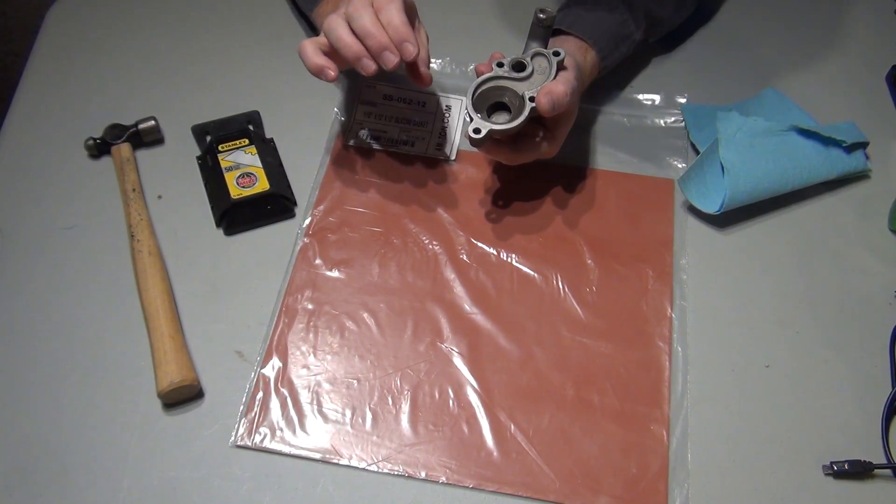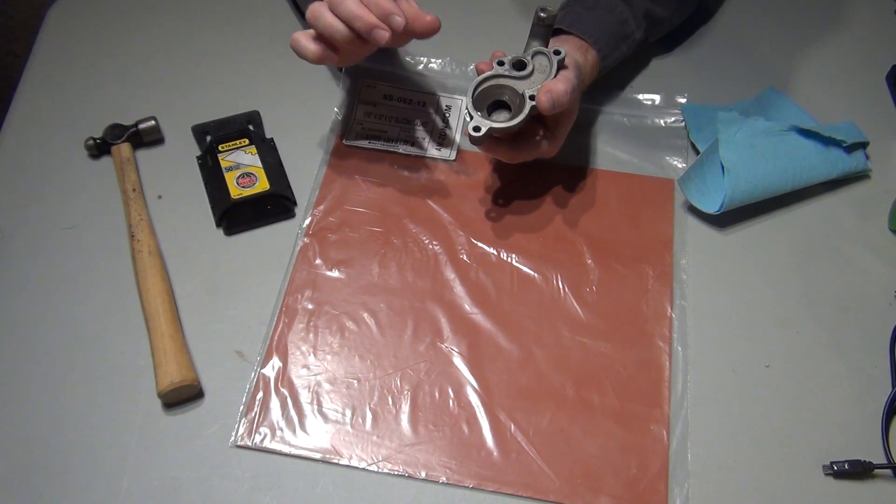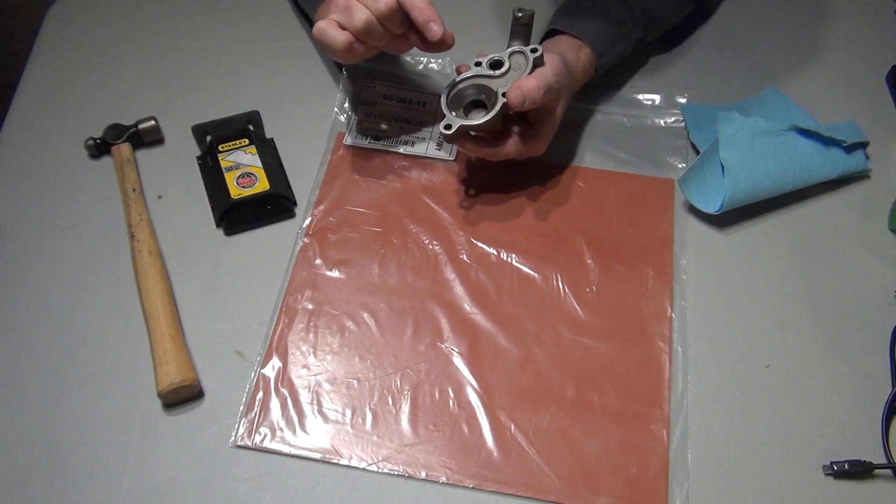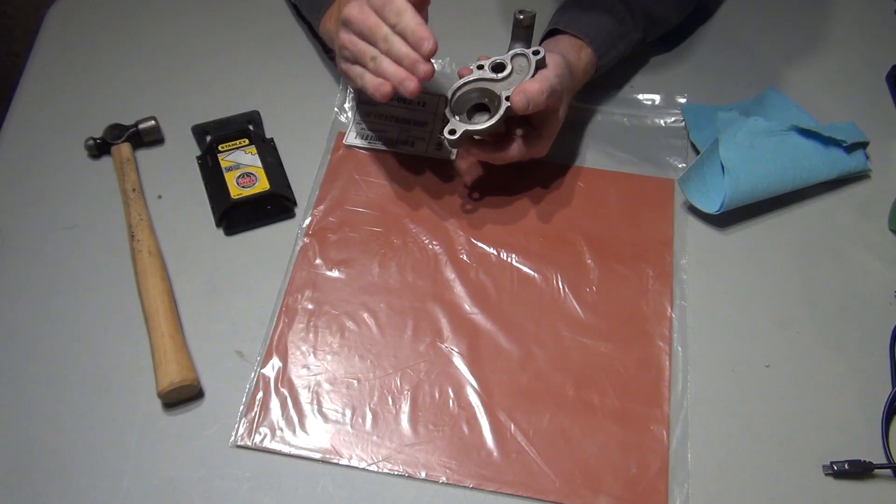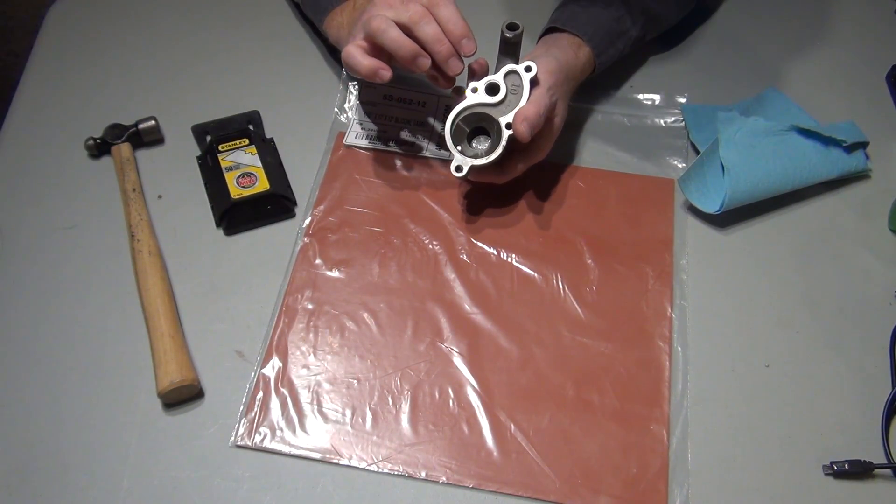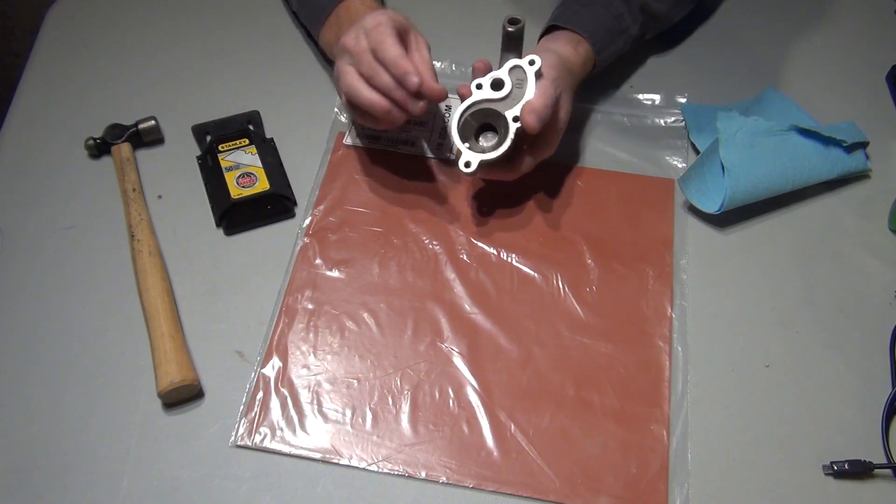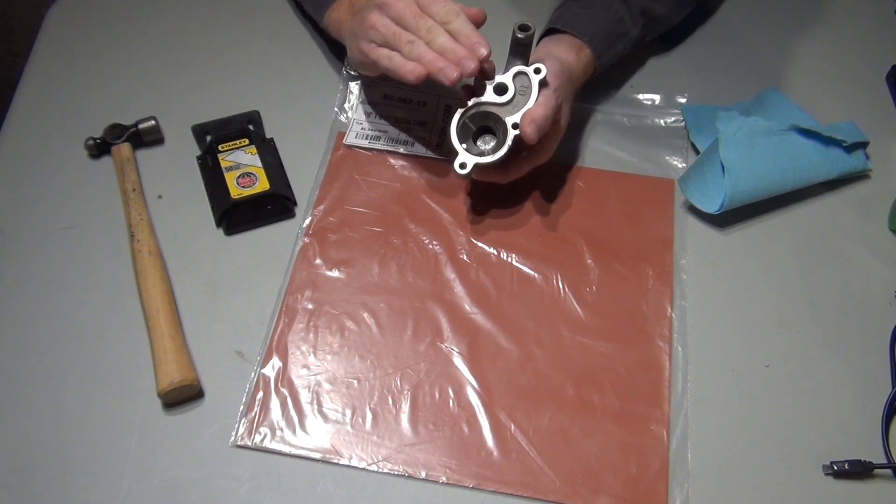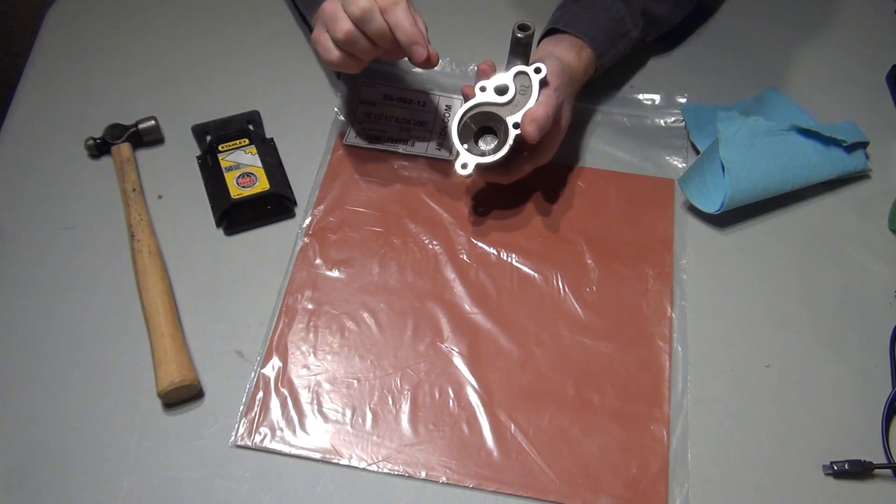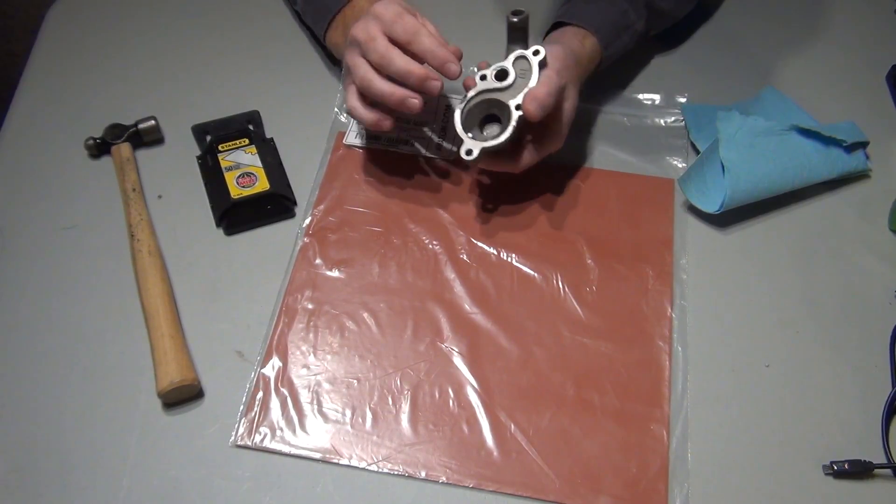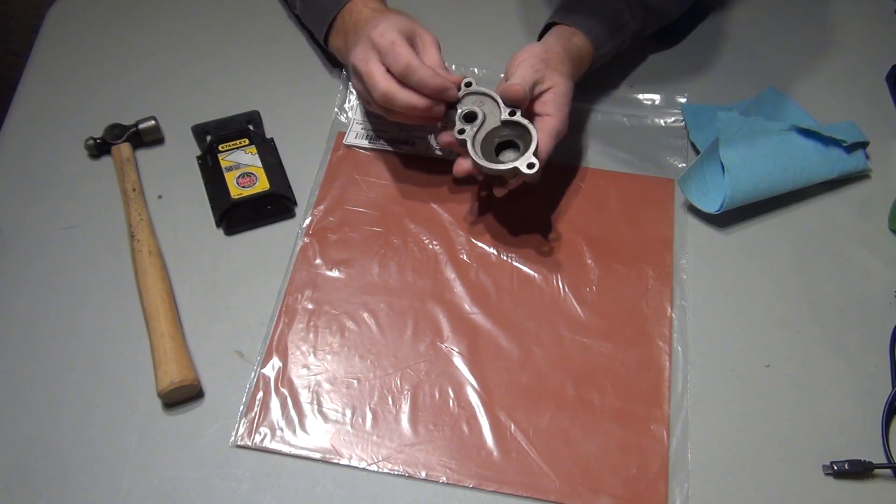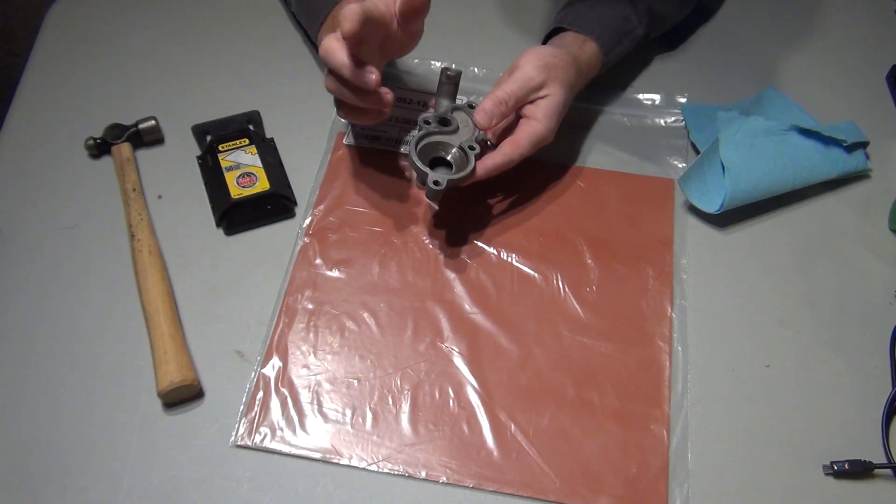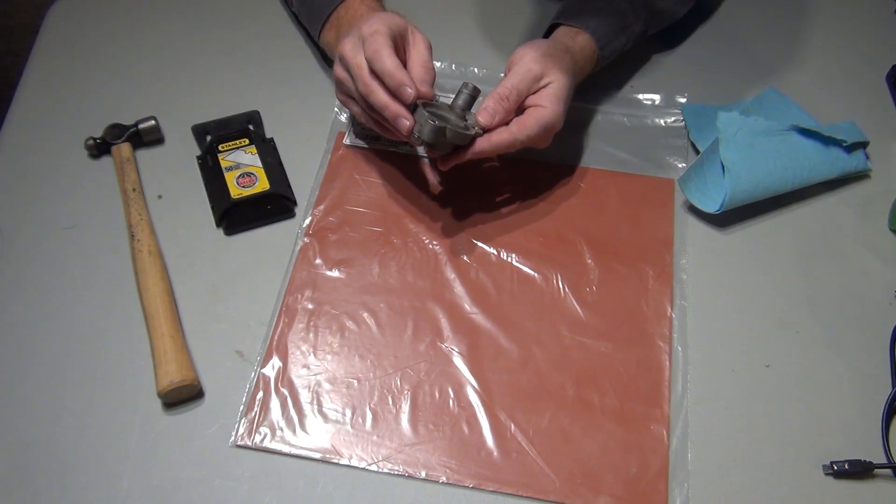I went ahead and took measurements of the nylon one and ground it down to match. So the metal one now looks just like the nylon one. I just took a Dremel and just ground the top of the fins. I only had to take a little bit off. It wasn't a drastic difference. So I have that done. I just used a Dremel and now I need a gasket.